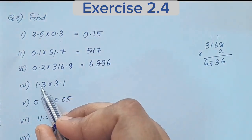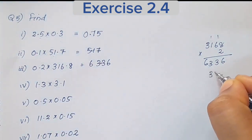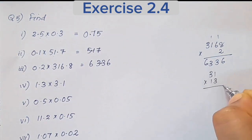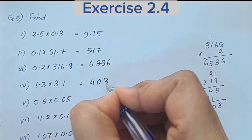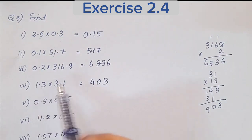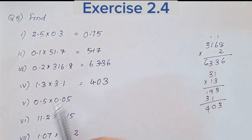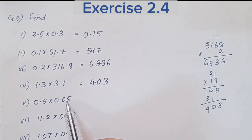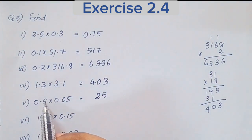1.3 × 3.1: we treat this as 13 × 31. 31 × 13: 3×13 — 3×3 is 9, 3×1 is 3. Then 1×3 is 3, 1×1 is 1. Combine: 39 plus 130 gives 403. The decimal point: 1 plus 1 = 2 digits.